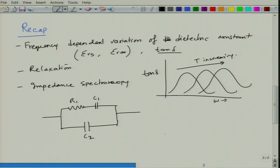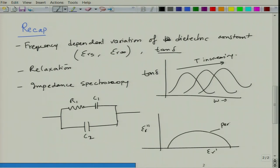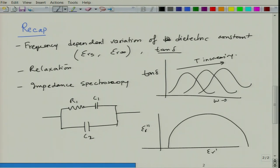For a perfect dielectric, when you plot epsilon_r double prime as a function of epsilon_r prime, you should obtain a perfect semicircle. The peak of this semicircle is at omega*tau equal to 1, and from this you can determine various characteristics.